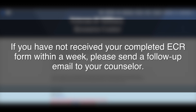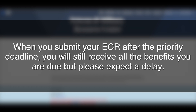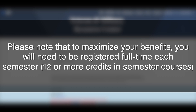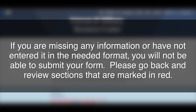If you have not received your completed ECR form within a week, please send a follow-up email to your counselor. Remember that the priority deadlines to submit your ECR are July 15 for the fall semester, December 15 for the spring semester, and April 15 for the summer session. When you submit your ECR after the priority deadline, you will still receive all the benefits you are due, but please expect a delay. To maximize your benefits, you will need to be registered full-time each semester, which means 12 or more credits in semester-based courses. If you are eligible for a housing allowance, you will want to take at least one face-to-face course that runs the full length of the semester to maximize your benefit.